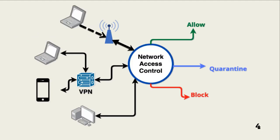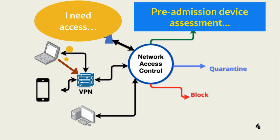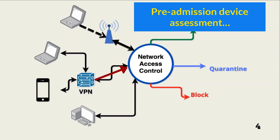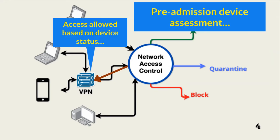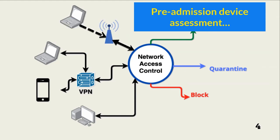Let's take a high-level look at how NAC works. When a device attempts to connect, it is assessed by a NAC service to ensure it meets policies in the network access control database. This assessment is done in one of two ways: pre-admission and post-admission. In pre-admission, an endpoint is assessed to ensure it meets policy compliance before it is allowed to connect. If the endpoint fails to comply with one or more policies, it is either denied access or sent to a quarantine network segment.